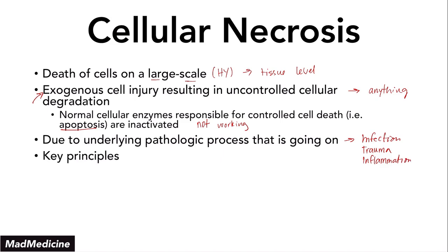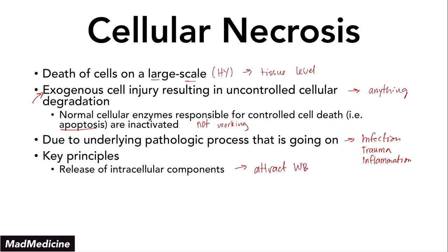The key principles of cell necrosis: when you have this massive damage occurring at the tissue level, your cells are going to release those intracellular components. As noted in the previous slide, the irreversible cellular injury stage is characterized by membrane damage at both the cellular and organelle level. When that damage occurs at the membranes, the intracellular components are released into the extracellular space — and when that happens, you are going to attract white blood cells, which cause inflammation. So another key hallmark of cell necrosis is the presence of inflammation.